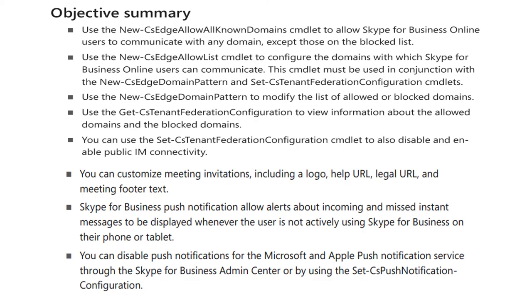You can customize meeting invitations including a logo, help URL, legal URL, and meeting footer text. Skype for Business push notifications allow alerts about incoming and missed instant messages to be displayed whenever the user is not actively using Skype for Business on their phone or tablet. You can disable push notifications for the Microsoft and Apple push notification service through the Skype for Business Admin Center or by using the Set-CS Push Notification Configuration cmdlet.